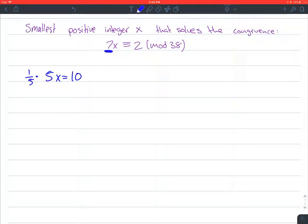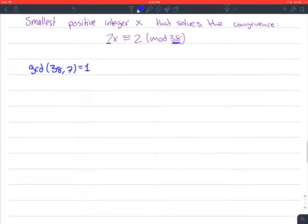We need to find what we're going to multiply the 7 by to make it a 1 in front of the x. So to do that, you first have to make sure that the GCD of this 38 and this 7 is 1, and it is. So we're good to go. They're relatively prime, so we can continue.